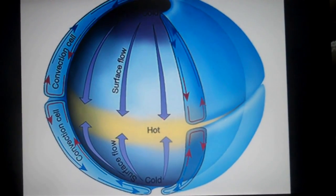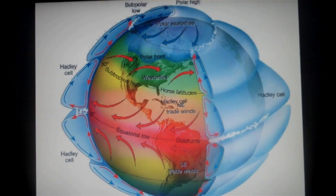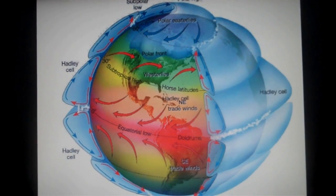So, this is why we now have the three-cell theory. The three cells from the equator to the poles are the Hadley, Ferrell, and Polar.